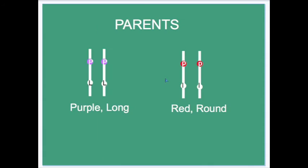Here we can represent the pure breeding or homozygous parents used in this cross. Note that the gene for color of the flower is on the same chromosome as the gene for the shape of the pollen. Today we describe this as gene linkage.